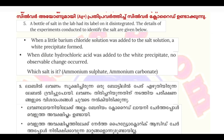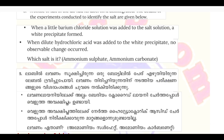The details of the experiments conducted to identify the salt are given. When a little barium chloride solution was added to the salt solution, a white precipitate is formed. When dilute hydrochloric acid was added to the white precipitate, there is no observable change. Which salt is it? The options are ammonium sulfate and ammonium carbonate.